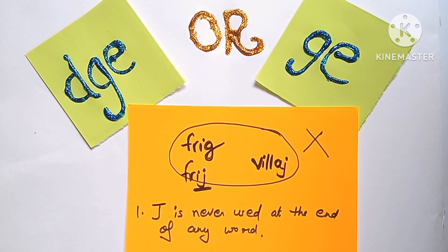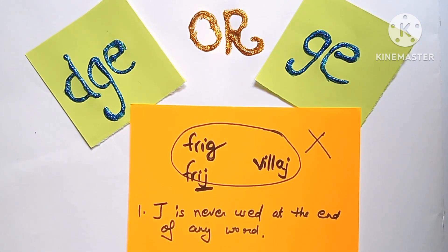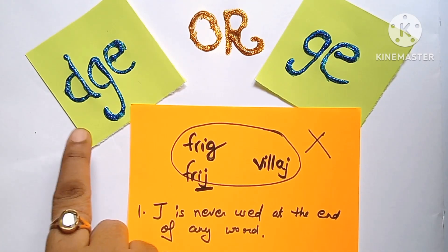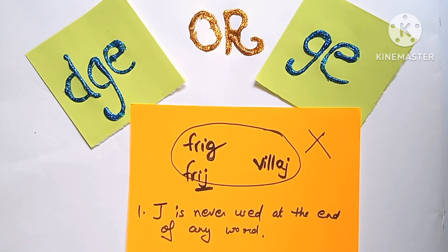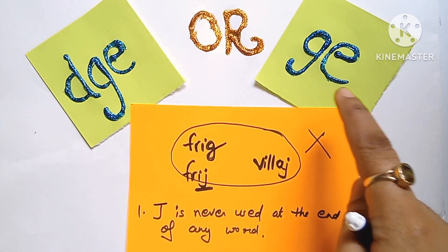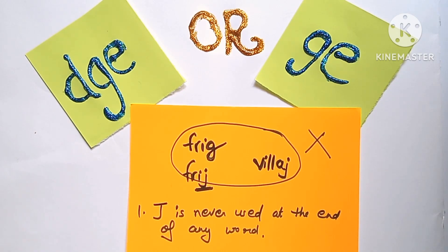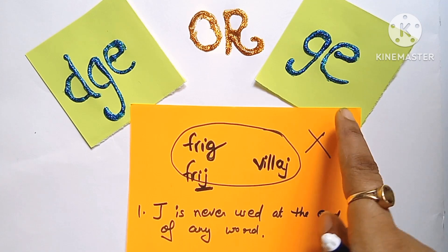The question arises: फिर J sound के लिए हम क्या use करते हैं? Last में जब भी J sound आता है, तो हमारे पास two options हैं — D, G, E, which is called the trigraph. जब भी three letters मिलकर एक sound बनाते हैं, उनको हम trigraph बोलते हैं. And G, E — मतलब two letters जब मिलकर एक sound बनाते हैं, उनको हम digraph बोलते हैं. So, J sound के लिए हमारे पास एक trigraph है और एक digraph है.